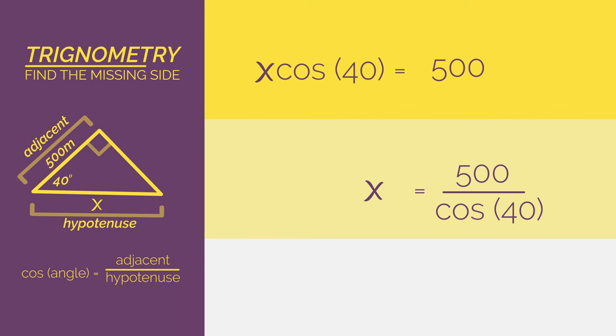So type into your calculator 500 divided by cos 40 and you get x equals 652.7. So x is 653 metres.